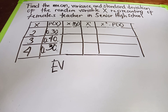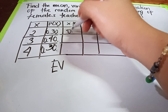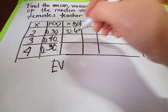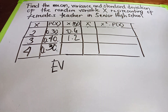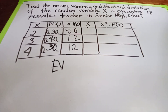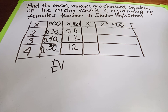Now we multiply each X value by its probability. Two times 0.30 gives 0.6. Three times 0.40 gives 1.2. Four times 0.30 also gives 1.2.